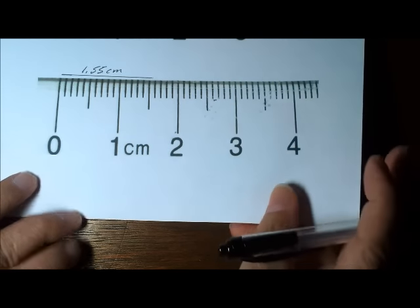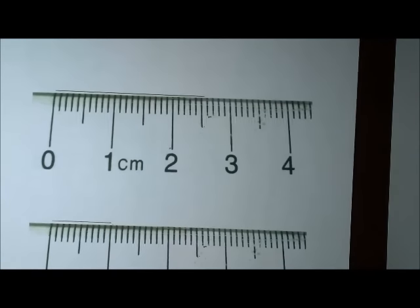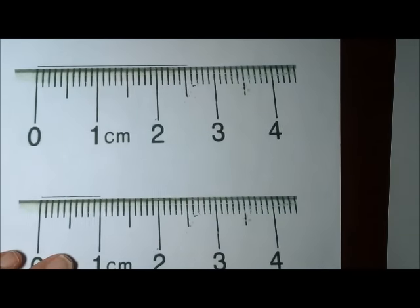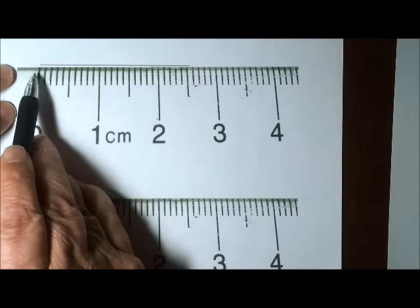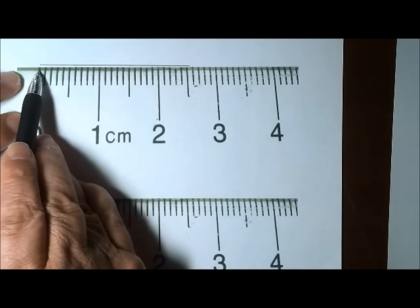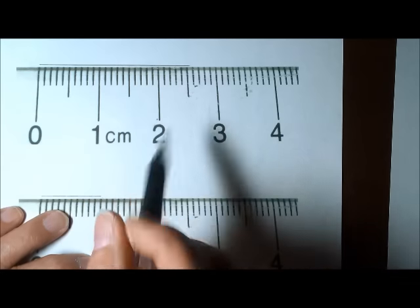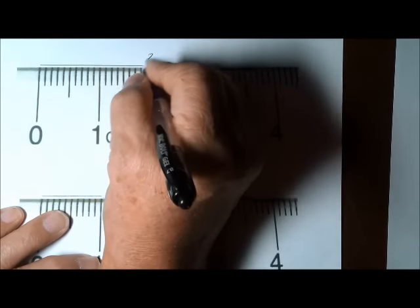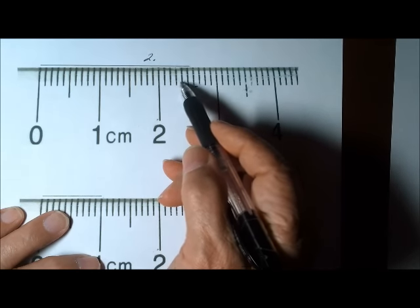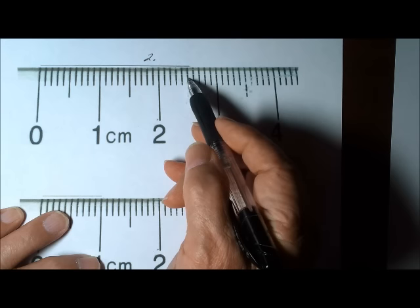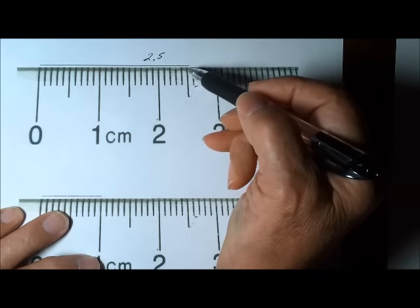Alright, let's take a look at a couple more lines, and I'll give you a little quiz. Here's the situation, we have a line that looks to be 2 whole centimeters, and then 1, 2, 3, 4, 5 millimeters.